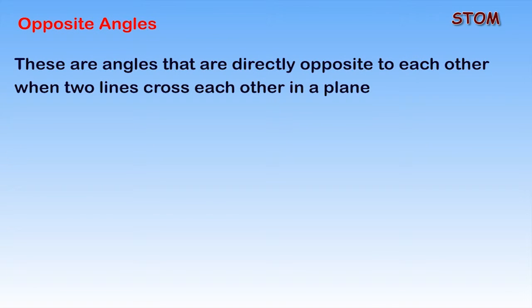Opposite Angles. These are angles that are directly opposite to each other when two lines cross each other in a plane.